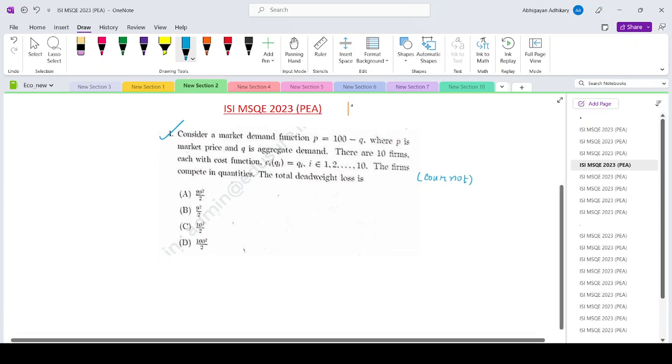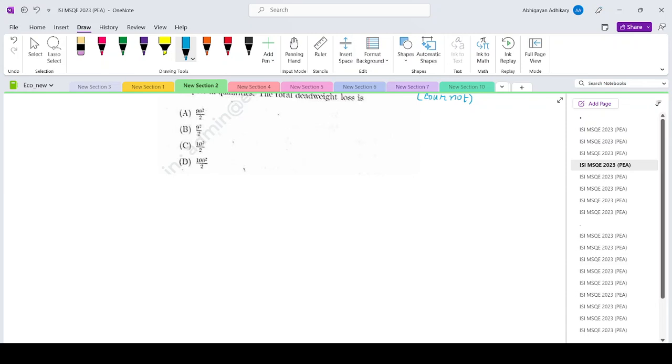First of all, let us find out what is the Cournot output, individual firm output, and the market output. Over here, my demand function is p equals 100 minus q, where q is basically aggregation of the output from the 10 firms, q1, q2, up till q10. The cost of the ith firm, ci of qi, is simply qi for all i.